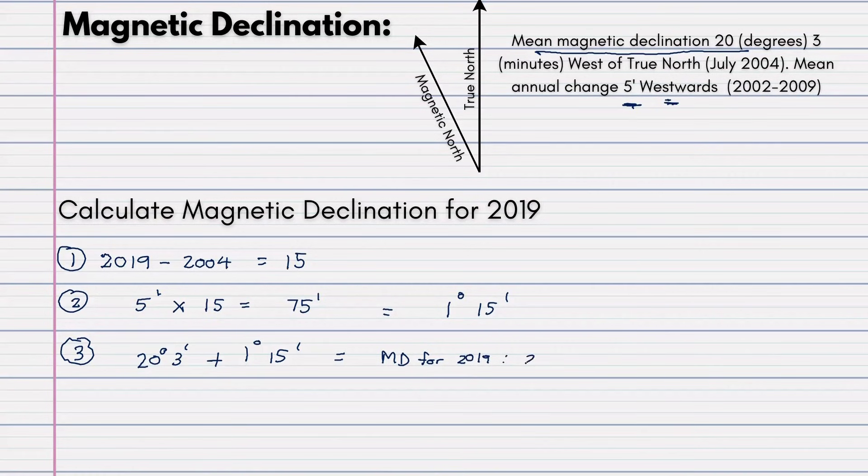This will be 21 degrees. Remember, we are adding 20 plus 1, gives us 21. And 3 plus 15 will give us 18. So that will be 21 degrees, 18 minutes, west of true north.